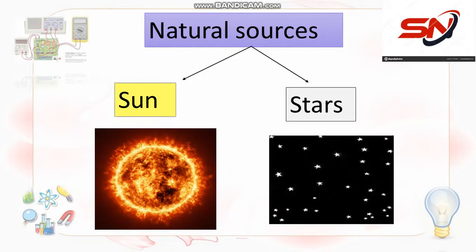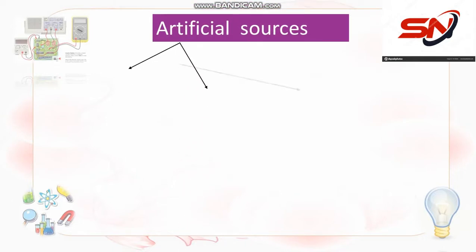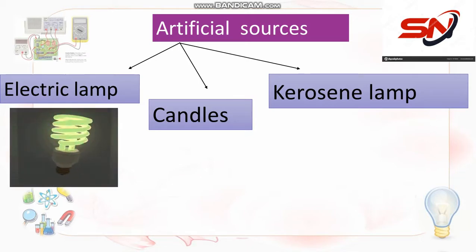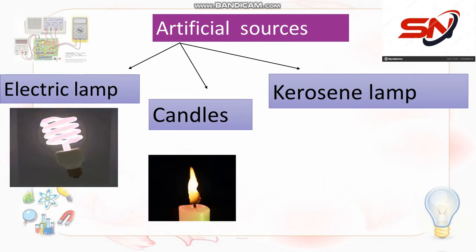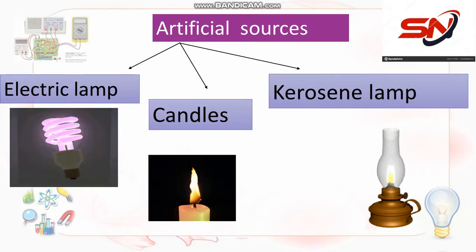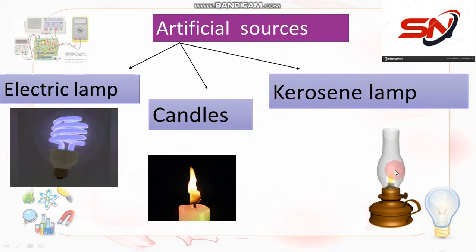Artificial sources — يعني احنا اللي عملناهم، made by man. Like kerosene lamp, electric lamp, candles. Electric lamp هي اللمبة بتاعتنا اللمبة اللي بالكهرباء. Candles اللي هي الشمعة. Kerosene lamp — دي lamp قديمة شوية كانوا بيستخدموها جدودنا، بتشتغل بالكيروسين. دي ما بقتش موجودة دلوقتي — احنا معظم الناس عندنا electric lamp. يبقى artificial sources: electric lamp, candles, kerosene lamp.